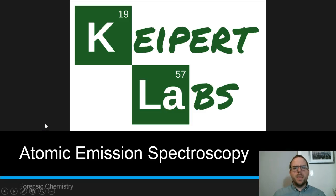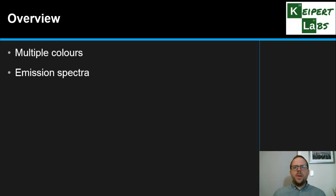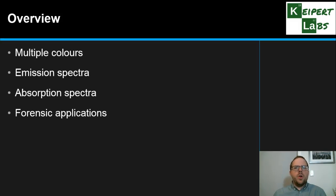Hi everyone, welcome to this episode of Kuypert Labs. In today's video we're going to be looking at the concept of atomic emission spectroscopy, a technique that forensic scientists can use to identify the elements present in a sample. Let's start with a bit of an overview of what we're going to talk about — how a particular element can give off coloured light, specifically multiple colours, how elements form emission spectra, how they form absorption spectra, and what applications there are for us to use this technique.